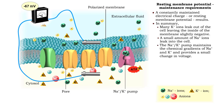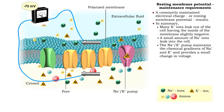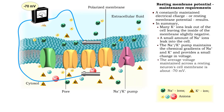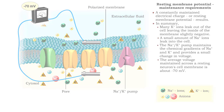The sodium-potassium pump maintains the chemical gradients of sodium and potassium, and provides a small change in voltage. The average voltage maintained across a resting neuron's cell membrane is about minus 70 millivolts.